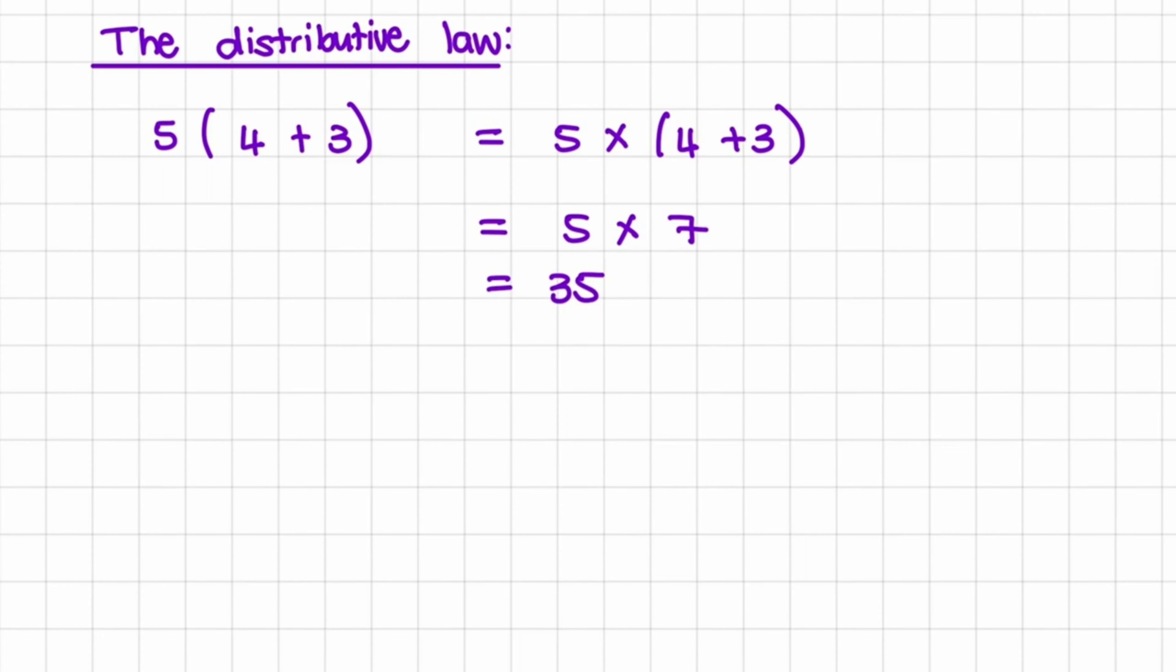But that's not the distributive law. What I want to show you is how we can rewrite this. So what we can do is take 5 and multiply that by 4. So I take the result of 5 times 4 and I'm going to add it to 5 times 3.